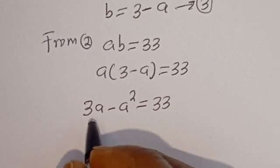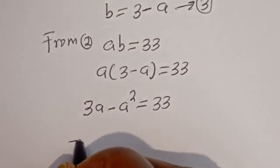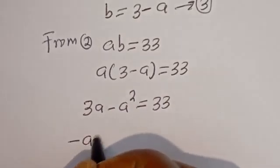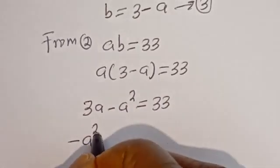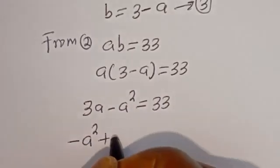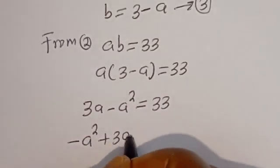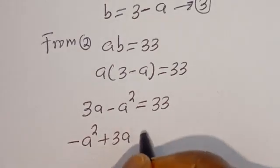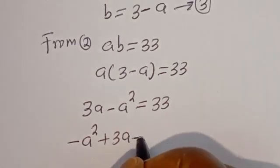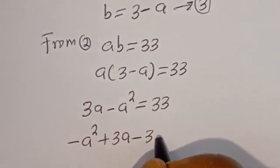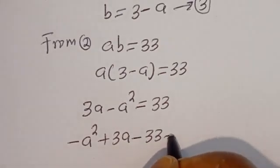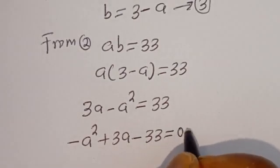Now let's open the bracket. We have 3A minus A squared is equal to 33. Now let's rearrange this. We have minus A squared plus 3A, and if you bring 33 to this side it becomes minus 33, is equal to 0.